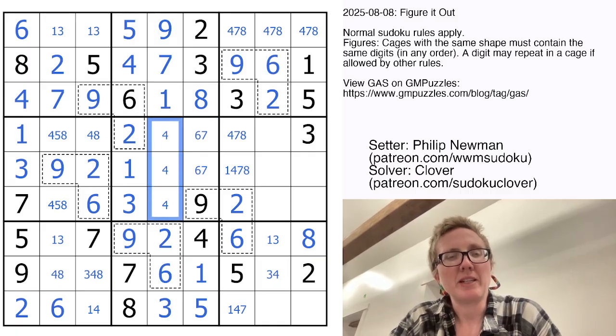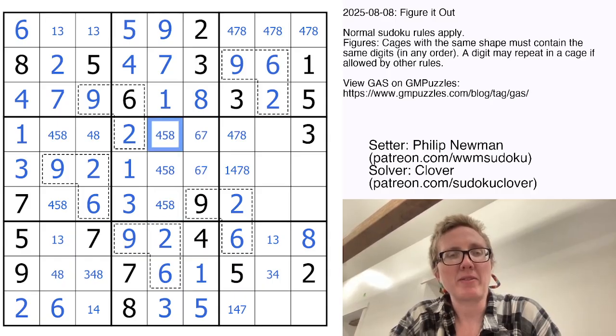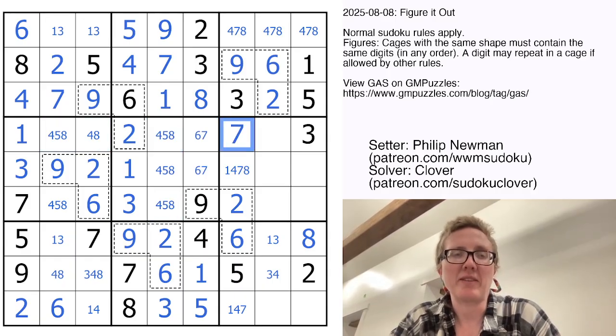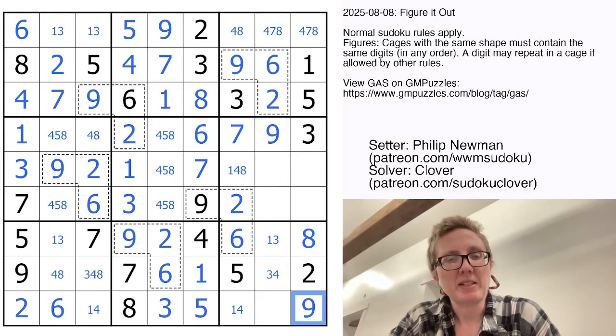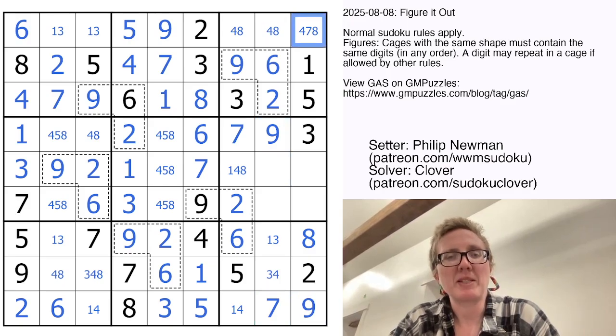These are going to be 6 and 7 to finish off the column. We don't know what order yet. I need a 4, 5, and 8 still. So I have a 4, 5, 8 triple here giving me a 7 and a 6. And that means my last cell in the row has to be a 9. I now know that this is going to be a 9 and to finish off the row I need to place a 7. That gives me a 7 right here.